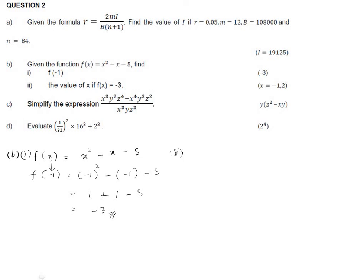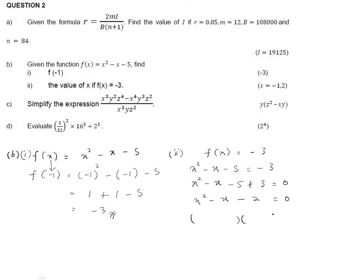Part b2: find the value of x if f(x) = -3. Substitute: x² - x - 5 = -3, so x² - x - 5 + 3 = 0, giving x² - x - 2 = 0. You can factorize using a calculator or manually. We get x = -1 and x = 2.